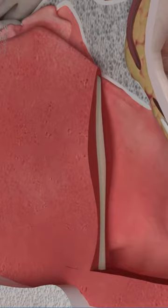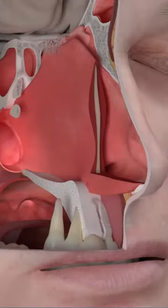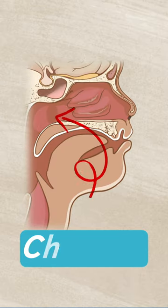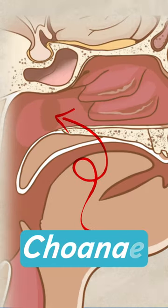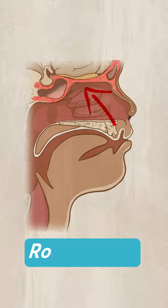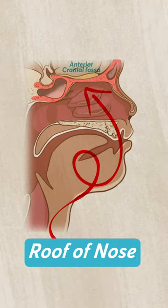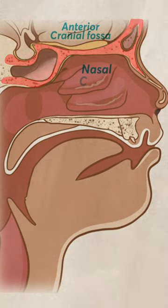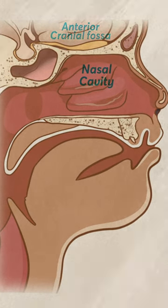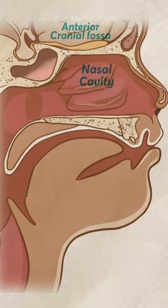When we talk of the anatomy of the internal nose, we have the inlet which is called the vestibule, where the nose begins. There is an outlet which is called the choana, which is the communication between the nose and the nasopharynx. The roof of the nose is formed by three bones — the frontal, ethmoid, and sphenoid — that separates the nasal cavity below from the anterior cranial fossa, which has the frontal lobe of the brain above.